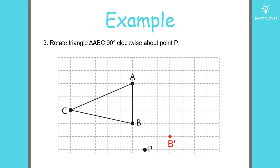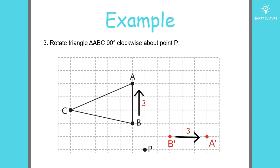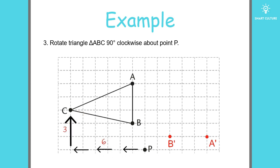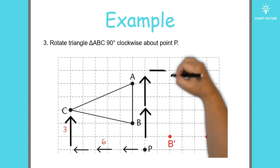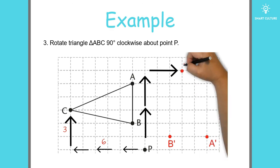Let's move on to point A — you'll see that point A is three units away from point P, so this will be the new position of point A, the image of point A. Let's look at point C — point C is six units to the left and three units above point P. Now we rotate this point 90 degrees clockwise. This is the image of point C. Now we have to join the rotated points.